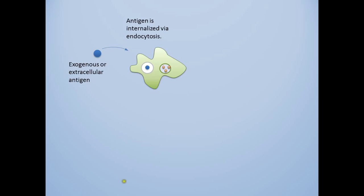In an exogenous or extracellular antigen, the antigen is internalized by the cell through endocytosis. This will lead to the formation of a phagosome. As in phagocytosis, the phagosome will fuse with a lysosome.